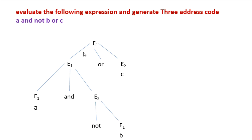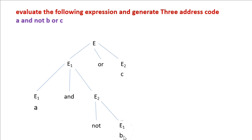We have converted the expression into an equivalent tree format. In this tree, NOT b is evaluated first because NOT has the highest precedence, then AND has the next precedence, then OR has the least precedence. So NOT of E1 has to be evaluated first. Since E1 holds the value b, E.place = b. This subtree evaluates E → NOT E1, so a temporary variable t1 is created. The three-address code emitted is t1 = NOT b.